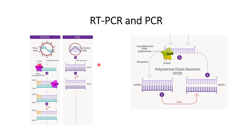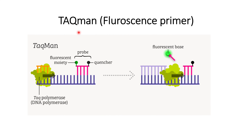Let us understand one more thing: the TaqMan primer. This is a specific kind of primer that helps to measure the amount of DNA formed because of the PCR or RT-PCR reaction. In normal conditions, this primer does not give any fluorescence because the quencher is close to the fluorescence moiety. This moiety will only give fluorescence when the distance between the quencher and the fluorescence moiety crosses a threshold limit.